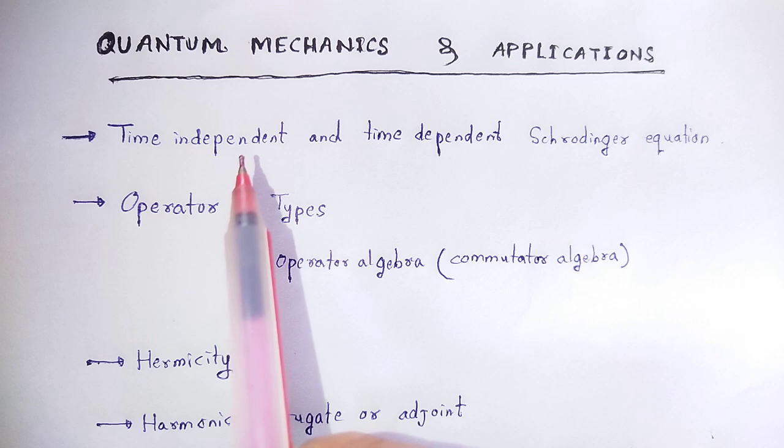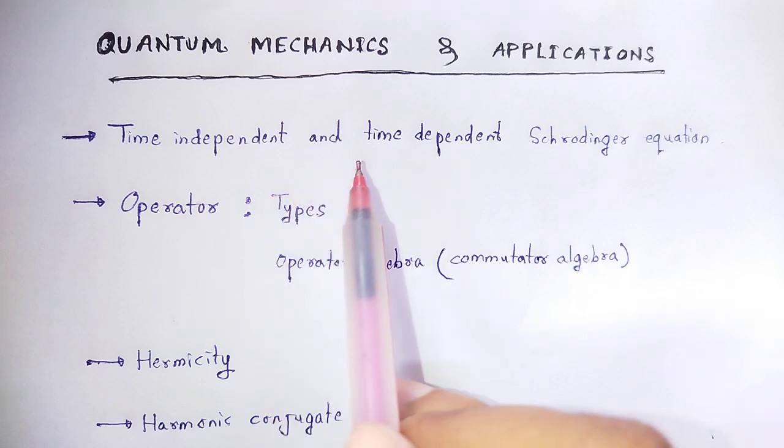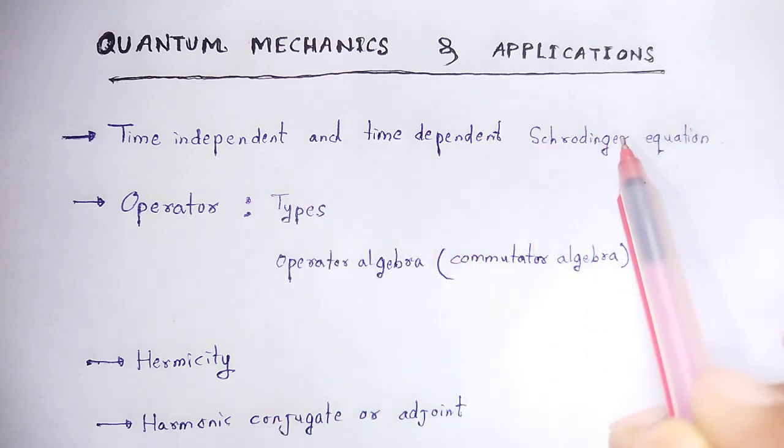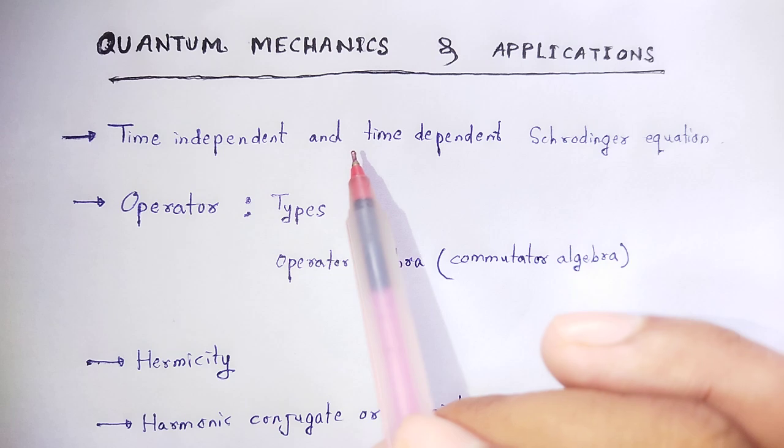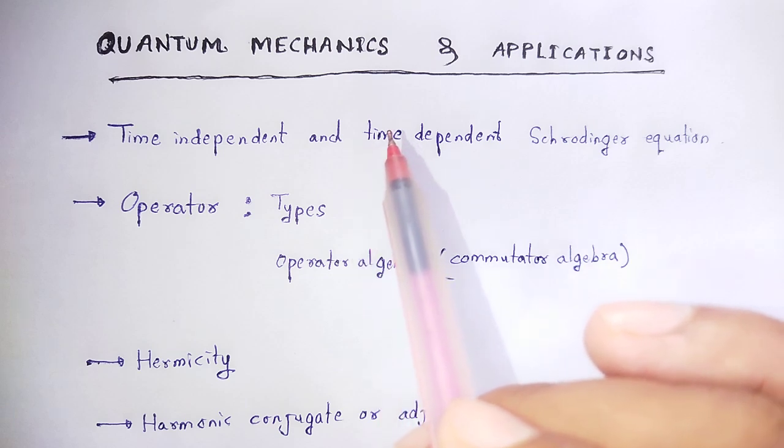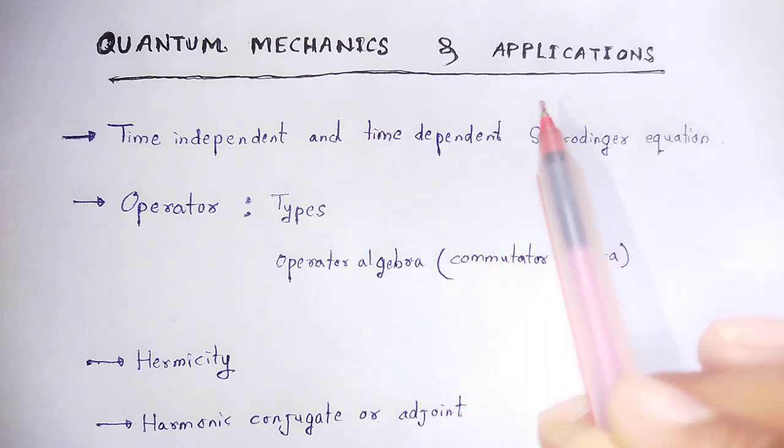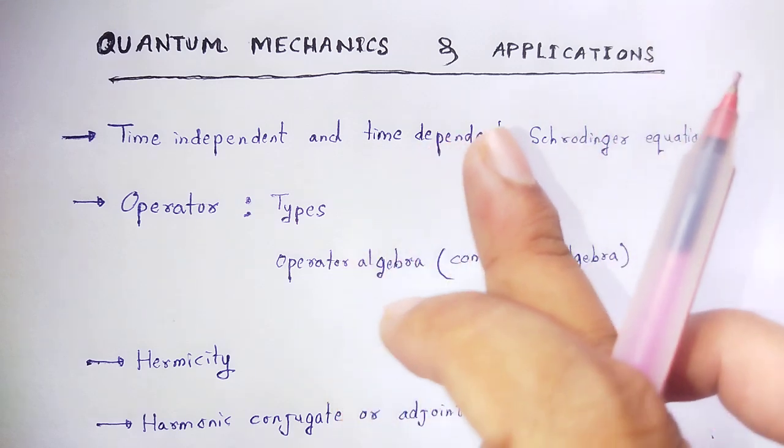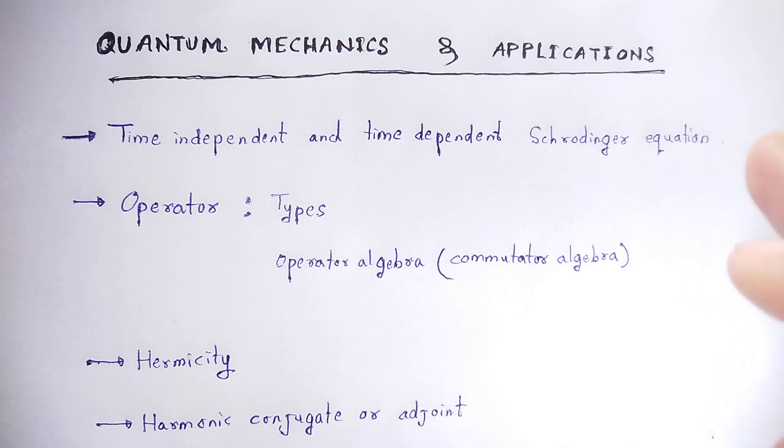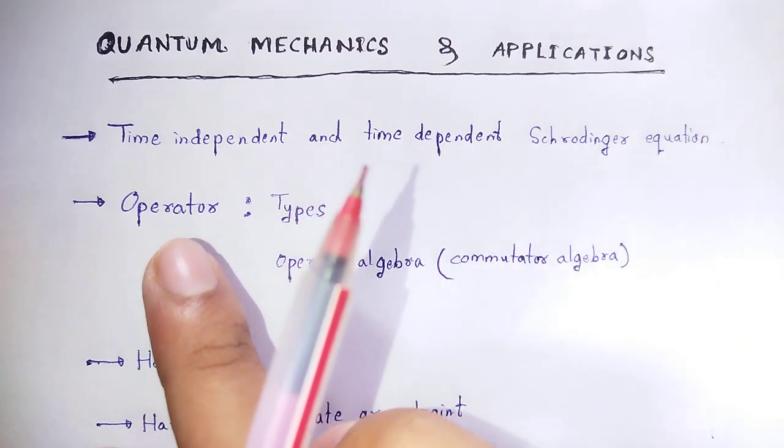First, we'll discuss the Schrödinger equation. We have two types: time-independent Schrödinger equation and time-dependent Schrödinger equation. The Schrödinger equation may depend on time or not. We'll cover the one-dimensional expressions as well as the three-dimensional expressions for both time-independent Schrödinger equation in one dimension and three dimensions, and time-dependent Schrödinger equation in one dimension and three dimensions.